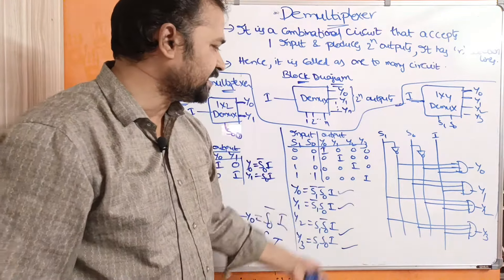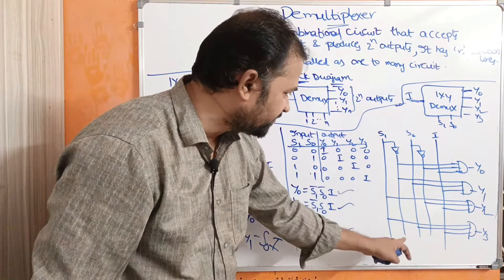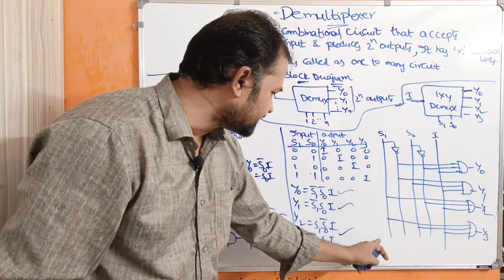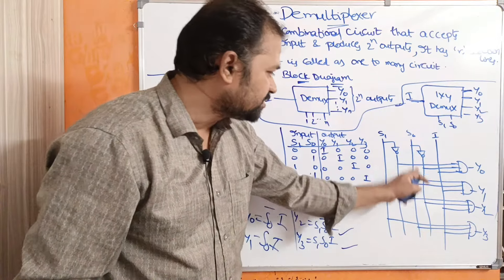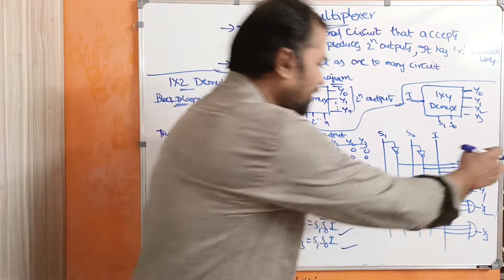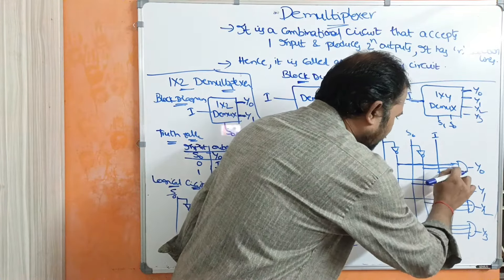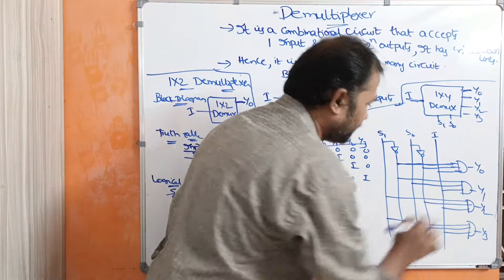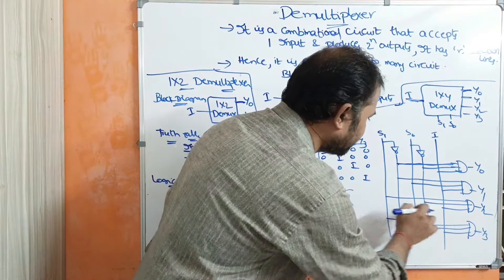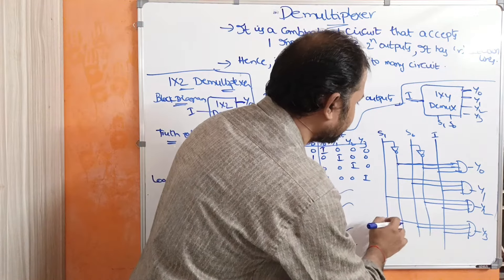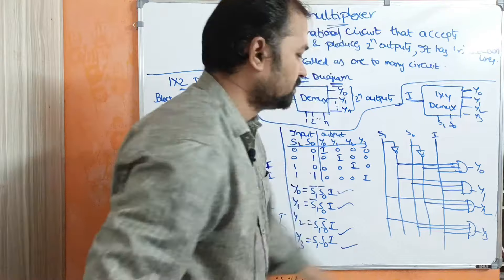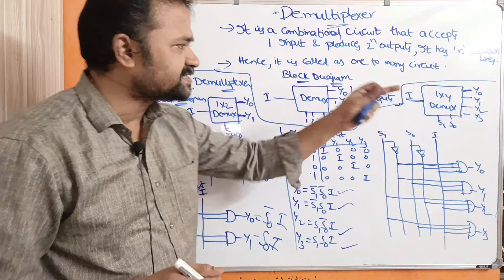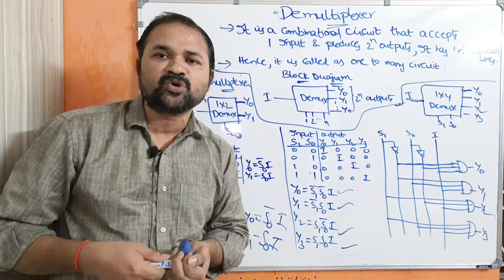Let us see the logical circuit. We have three input lines: s1, s1 bar, s0, s0 bar, and input i. For y0: AND of s1 bar, s0 bar, and i. For y1: AND of s1 bar, s0, and i. For y2: AND of s1, s0 bar, and i. For y3: AND of s1, s0, and i. This covers what a demultiplexor is and the types: 1×2 and 1×4 demultiplexor. A demultiplexor is entirely opposite to the multiplexor.